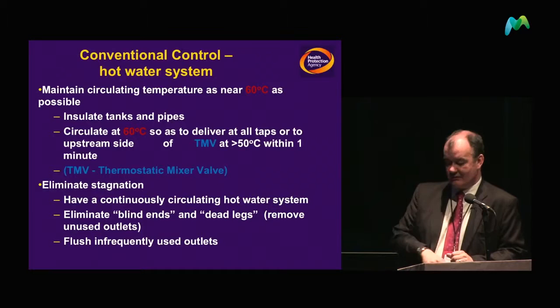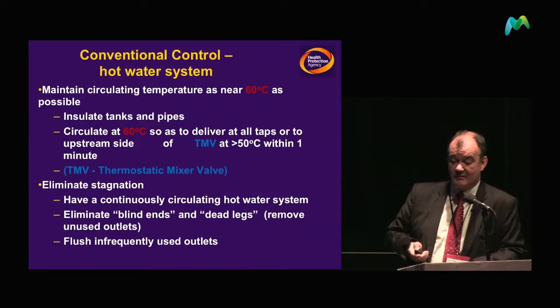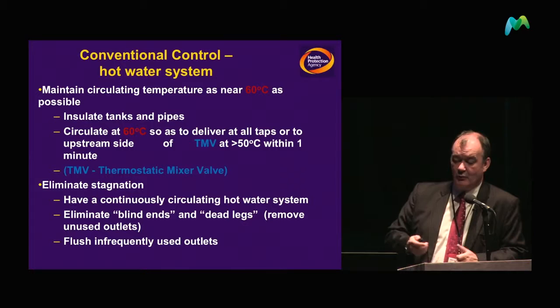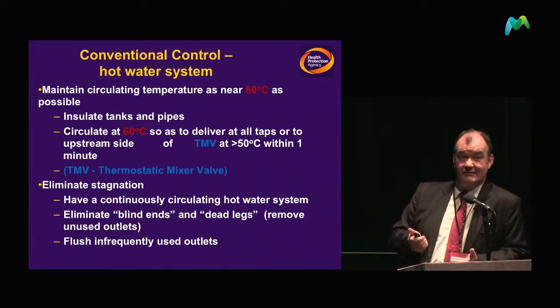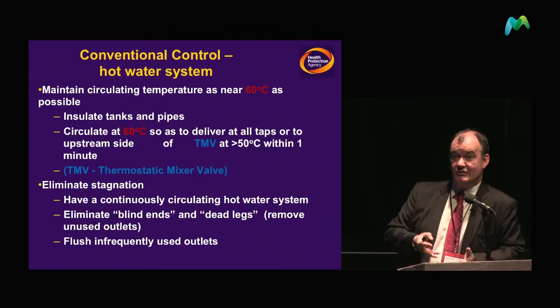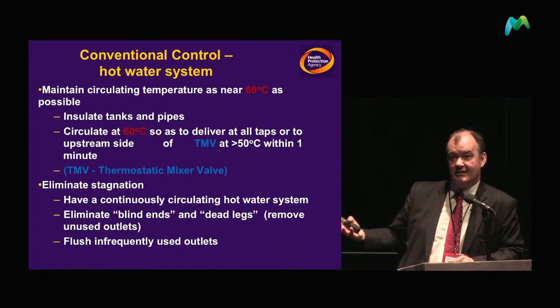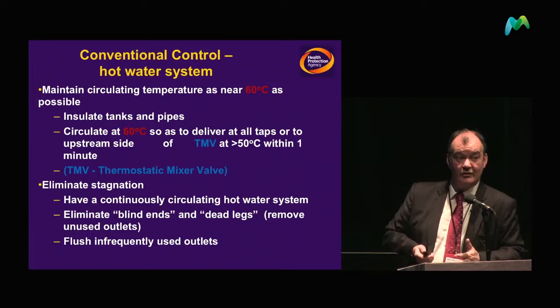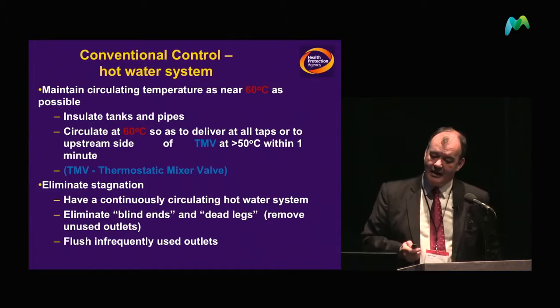The key element in maintaining a conventional hot water system is trying to keep it as near to 60 degrees as possible. However, one of the big problems is thermostatic mixer valves — TMVs — which were introduced to prevent scalding and deliver water at about 40 to 42 degrees at the point of use. They do produce their own problems: while we reduce the risk of scalding, we increase the likelihood of Legionella growing — the classic trading off of one risk against another.